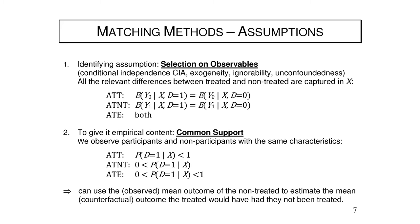When is this valid? It requires one assumption and one requirement. The identifying assumption is that matching can only take place on variables we observe. Economists call it selection on observables; statisticians call it ignorability or unconfoundedness. Basically it means all outcome-relevant differences between treated and non-treated are captured in observable variables X. Once we condition on a suitable set of X, the no-treatment outcomes are the same on average for treated and non-treated.